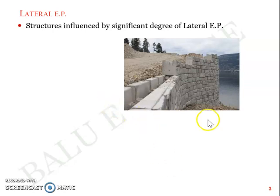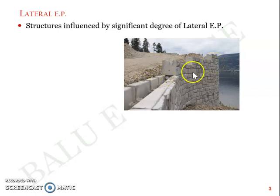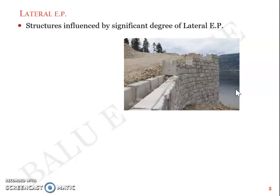Now, lateral earth pressure — if you remember the first slide from the introductory class, there's a figure showing a retaining wall which retains earth to one side. This retaining wall is acted upon by what we call lateral earth pressure, meaning the soil which the wall retains exerts a force on the retaining wall — in this case, to the right-hand side, so the soil is trying to move the retaining wall out of its body. That is called active earth pressure.